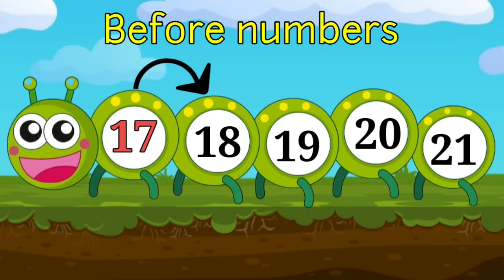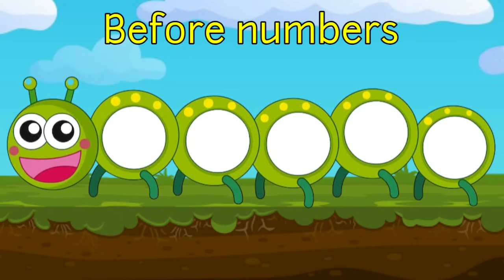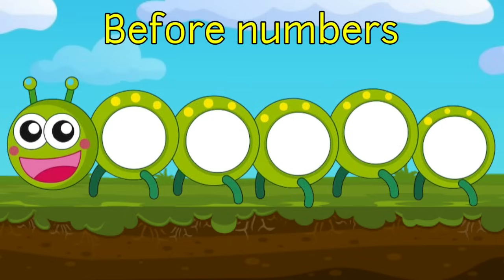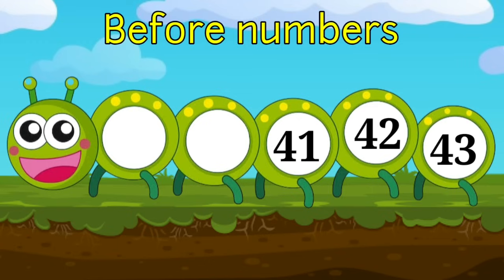Next we have 36, 35, 34, 33. Which number will come before 33? Very good — before 33 is 32. Now let's do one last example of before numbers. In this caterpillar we have 43, 42, 41, 40. Now tell me, which number will come before 40?